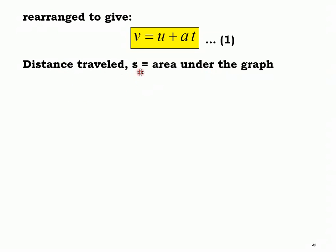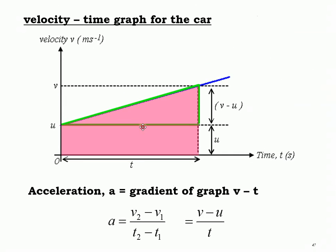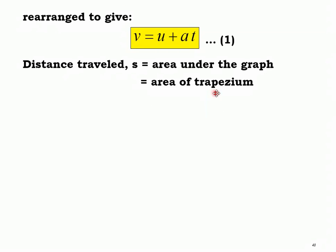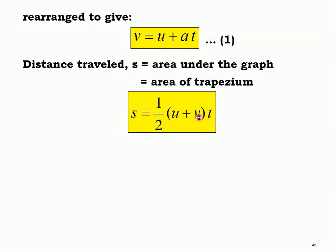Rearranging a = (v - u) / t, we get v = u + at. This is our first equation. The distance travelled is the area under the graph. Looking at the shape, the pink shaded area is a trapezium. The area of a trapezium is half of the sum of the parallel sides multiplied by the width, so the area under the graph is s = ½(u + v)t. This is our second formula.